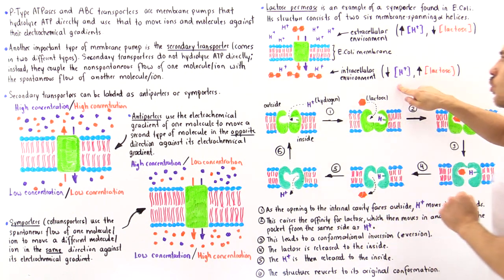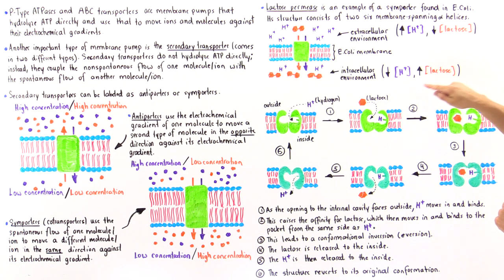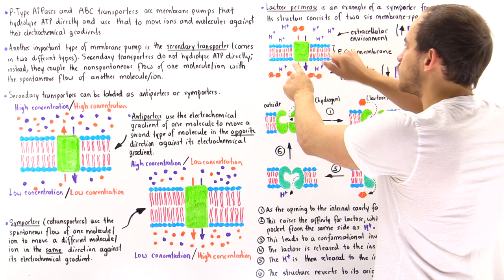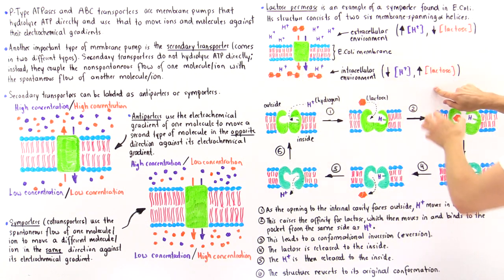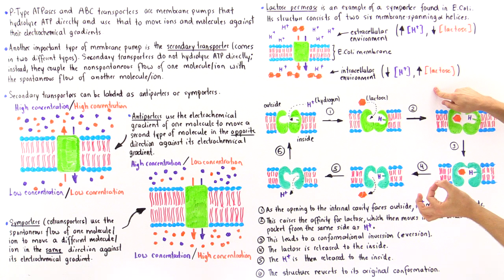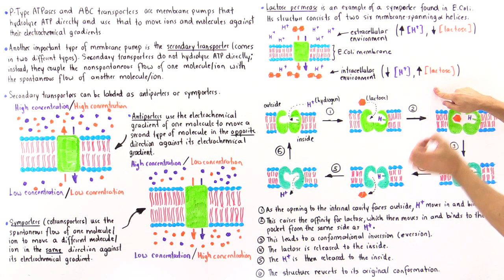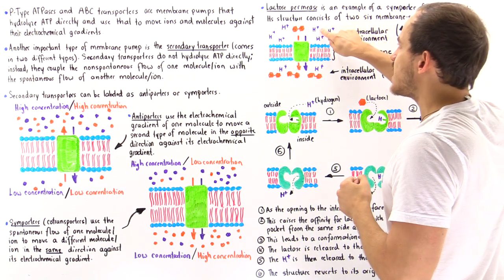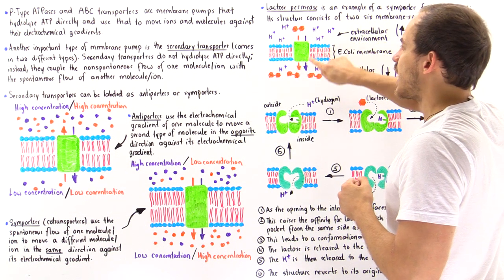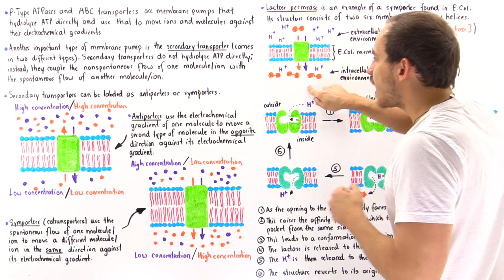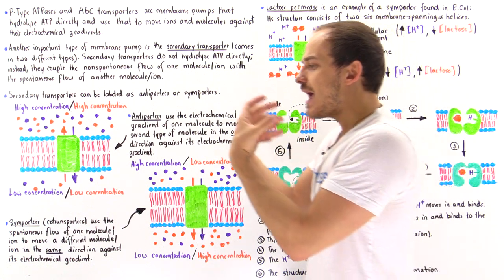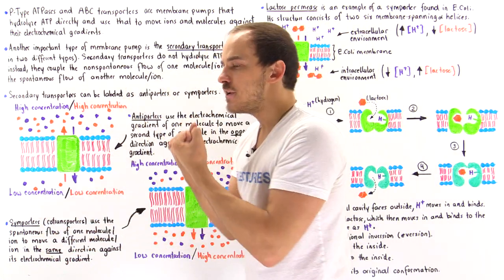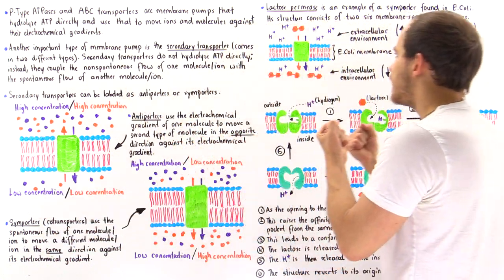We have this symporter, shown here in green, and it allows the spontaneous movement of these protons from the outside to the inside. Free energy is released.